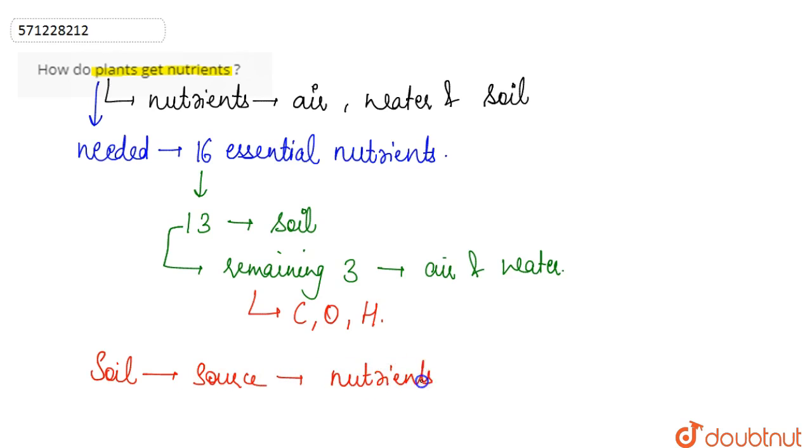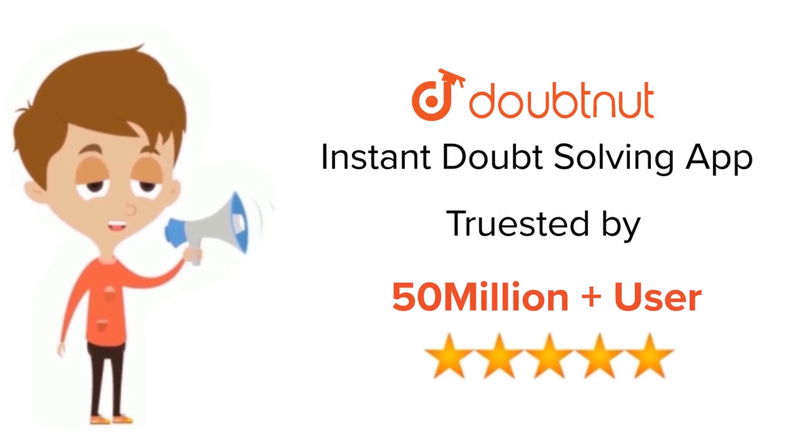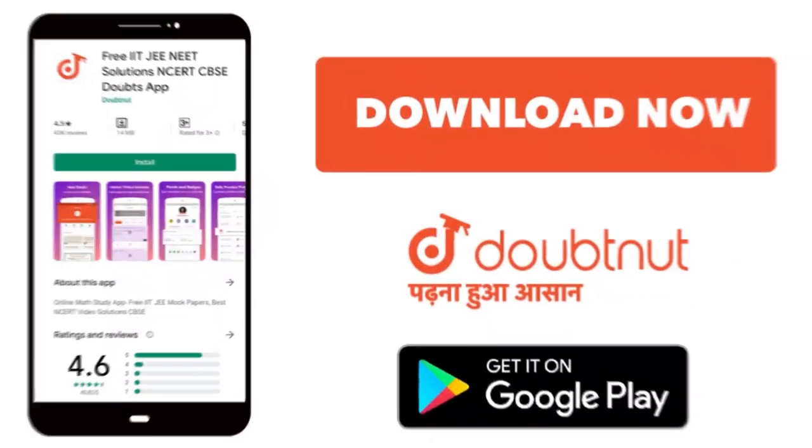So this is how plants get the nutrients. For class 6 to 12, IIT-JEE and NEET level, trusted by more than 5 crore students, download Doubtnet app today.